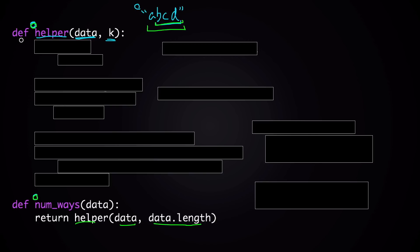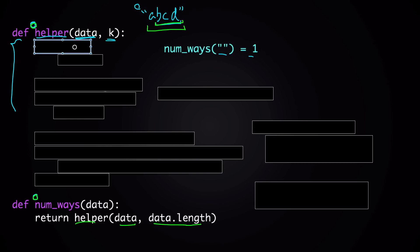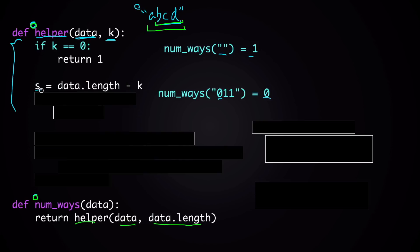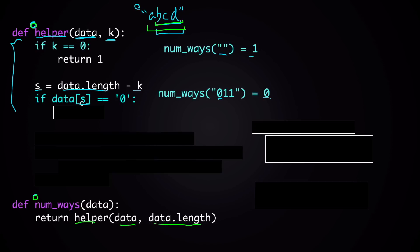In the helper function, let's handle the two base cases first. If k is 0 — the string is empty — we return 1. For the second base case, we define a variable s as the starting index of the letters we're examining: s = len(data) - k. Then if data[s] equals '0', we return 0.